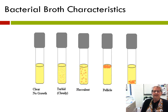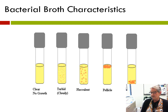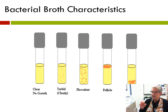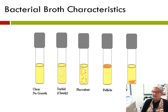Bacteria can also have distinctive characteristics when grown in liquid or broth cultures. A broth culture with no bacteria will be clear — you can see through it. Almost all bacteria growing in broth will make the broth turn turbid or cloudy. But bacteria can also appear flocculent, forming little clumps in the broth. You can also get a pellicle, a kind of crust over the top of the broth, or sediment where bacteria fall to the bottom.